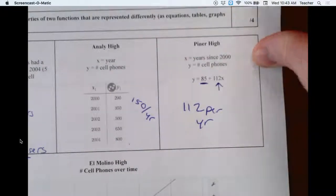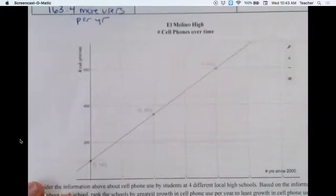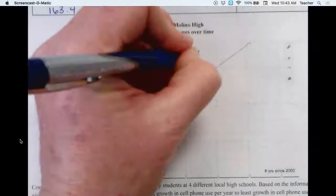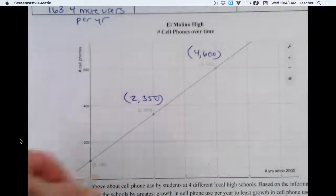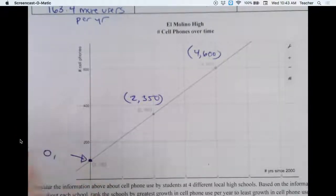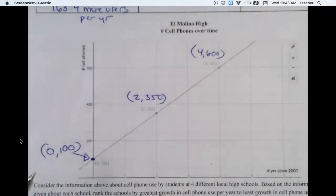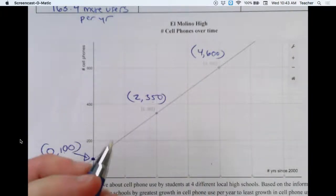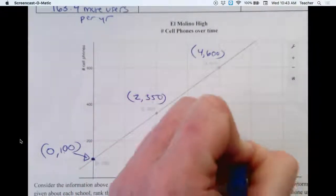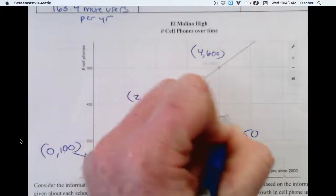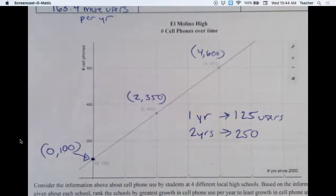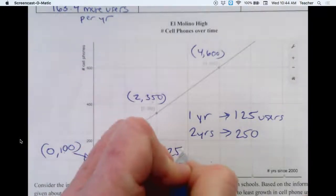Now let's take a look at El Molino. These are hard to read on the video, but this is 2, 350. And this point is 4, 600. And this point is the intercept, it's 0, 100. In two years, I went up 250. In another two years, I went up another 250. So two years, we go up 250. So that would mean in one year, we're going up by 125 users. Divide 250 by 2, and you get 125. So this is going up by 125 users per year.